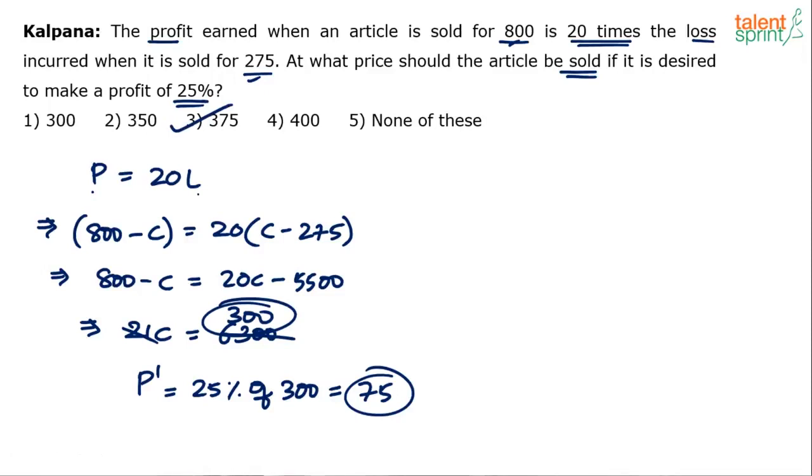Selling price is cost price plus profit. Cost price is 300. The profit in this case comes out to be 75 rupees. So 300 plus 75 equals 375. Option 3 will be the final answer to this question.